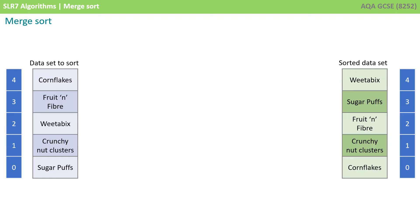Here's a dataset of breakfast cereals. The original data to sort is shown on the left, and the sorted data that we're trying to achieve is shown in green on the right. The object is to put them in alphabetical order with the lowest one at the bottom: cornflakes, crunchy nut clusters, fruit and fibre, sugar puffs, and Weetabix at the top. We're now going to go through the steps of the algorithm to see if we can get to the sorted dataset.